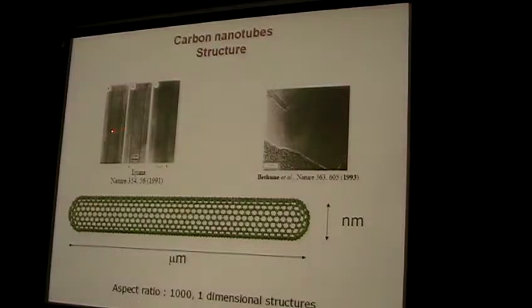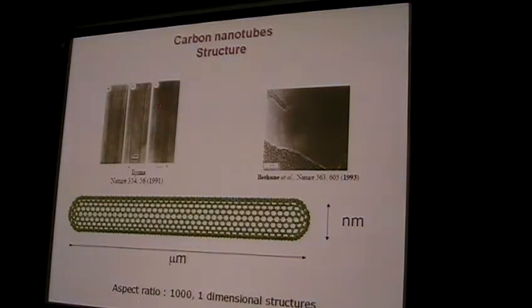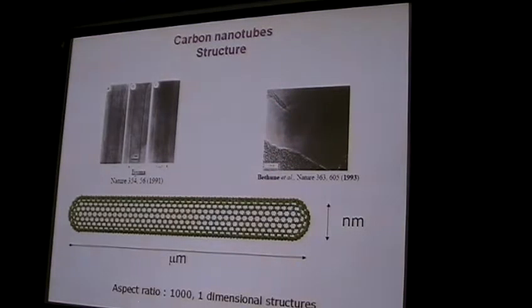Here you have electron micrographs of different carbon nanotubes: multi-walled, double-walled, this is a multi-walled, and this is a single-walled nanotube.